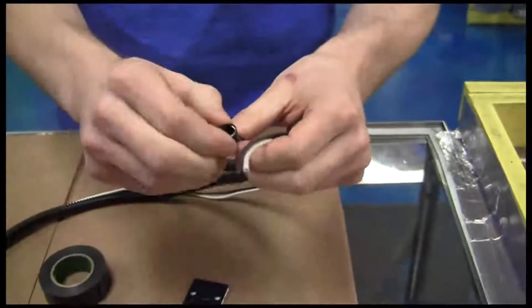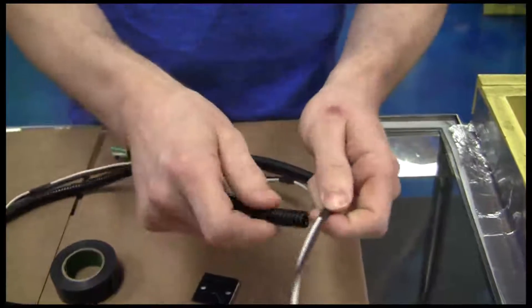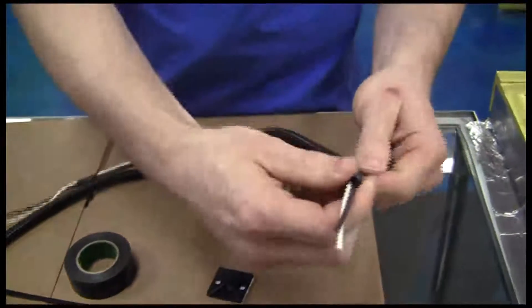The corrugated loom has a slot in it, so it makes it real easy to slide onto the wires. All you do is take the wire in one hand, the corrugated loom in the other, and just slide it on there.